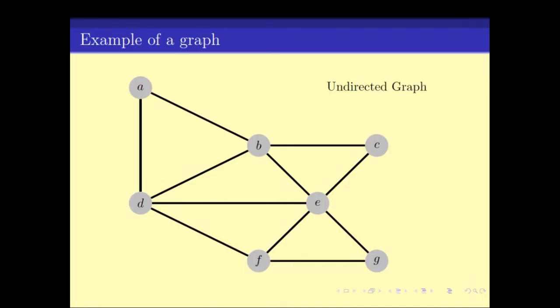Usually we visualize this whole graph as something like this. We can also put some weights on edges, which can be used for modeling a problem — in that case we draw it like this. And as mentioned, edges can also be directed: if D-A is in the edge set, it does not imply that A-D is there. How do we denote that pictorially? We denote it with arrows.